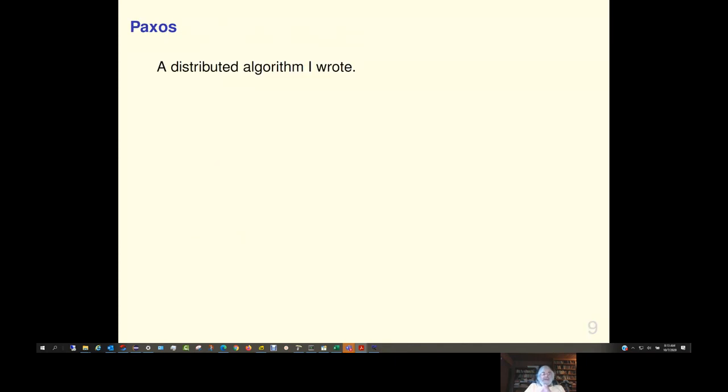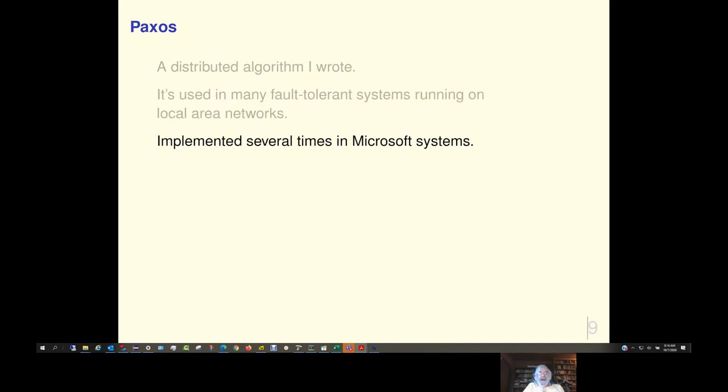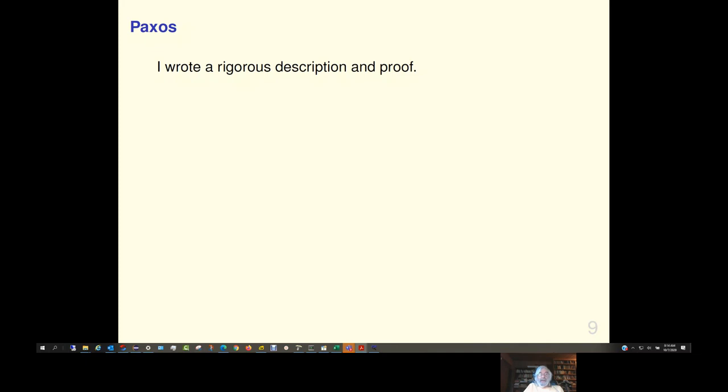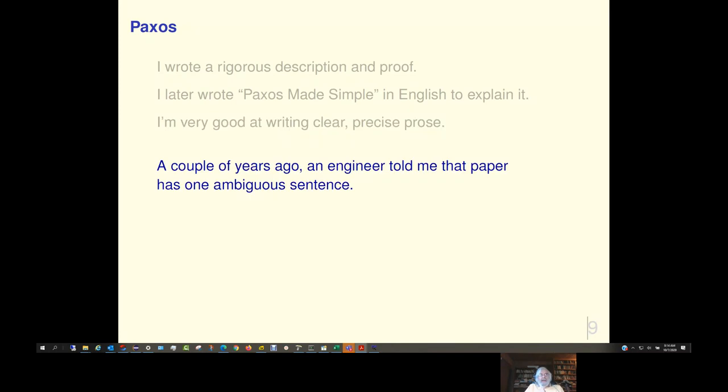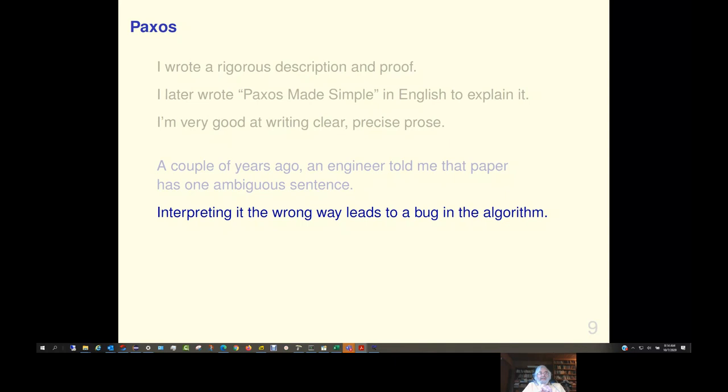It doesn't scale well. A large bunch of English is pretty hard to make sense of. And it can be ambiguous. A little story. Now, Paxos is a distributed algorithm that I wrote. And it's used in many fault-tolerant systems running on local area networks. And it's been implemented a few times inside of Microsoft systems. Now, I wrote a rigorous description and proof. But people complained that that was hard to understand. So, I later wrote a little document called Paxos Made Simple, which described Paxos in English.